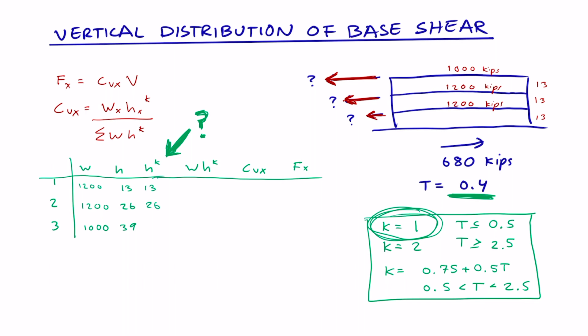This makes h raised to the power of k the same as h. The next column is fairly straightforward. We multiply the weight times h raised to the power of k and get the following numbers. Next, we find the sum of w*h^k for each level by adding them up to get 85,800.